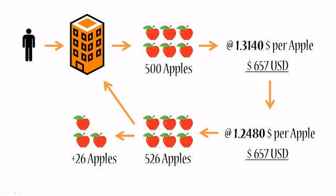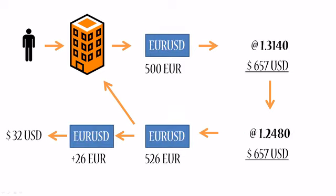You're left with an extra 26 apples. What you do with these 26 apples is convert them back into US dollars at the exchange rate at the time, and that basically means you now have a profit of 32 US dollars. If we replace apples with euros as we did previously, you will see that nothing changes — this whole scheme works for euros just as it did for apples.